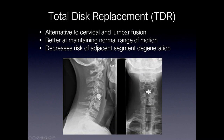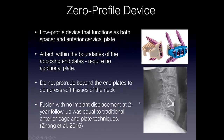Here's an example on imaging of what a total disc replacement appears like — this is in the cervical spine, and here's an example in the lumbar spine. Zero-profile devices are low-profile devices that function as both the spacer and the anterior cervical plate. You can see the pseudo-anterior plate here with screws that go into the vertebral body. The spacer enters into the disc space after the discectomy and can be filled with bone graft material. These do not protrude beyond the anterior margin of the disc space, so they don't press on the soft tissues or esophagus as an anterior plate would, and they show equal rates of fusion compared to anterior cages and plate techniques.